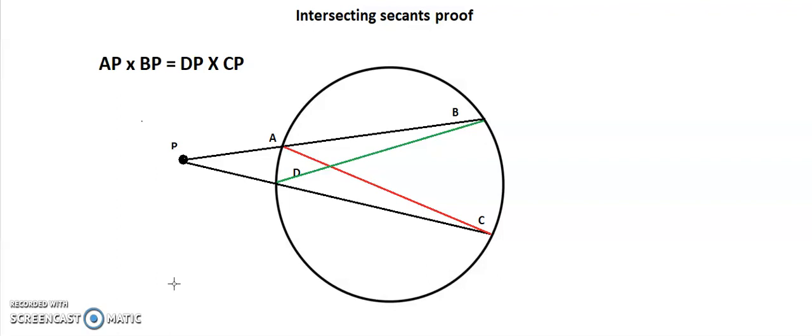The second thing we need to realize - we know that they are congruent triangles because when we have a chord here, these secants coming off it must have the same angle. So I know these two angles are exactly the same and they are both sharing the angle P.